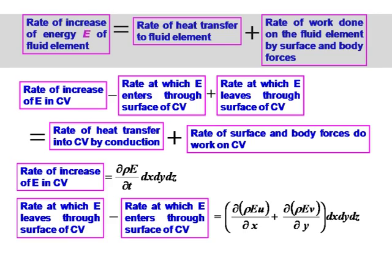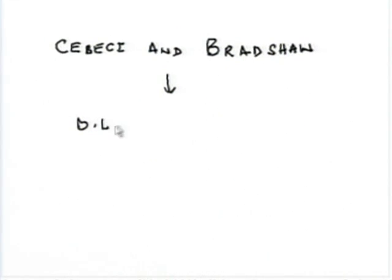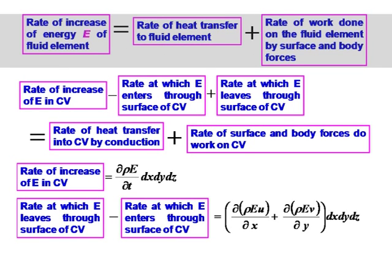This derivation is taken from Boundary Layer Flows by Sebasi and Bradshaw — a wonderful book. If anyone wants to read and understand more about convective heat transfer, this is the book. The rate of increase of energy e of the fluid element equals the rate of heat transfer to the fluid element plus the rate of work done on the fluid element by surface and body forces.